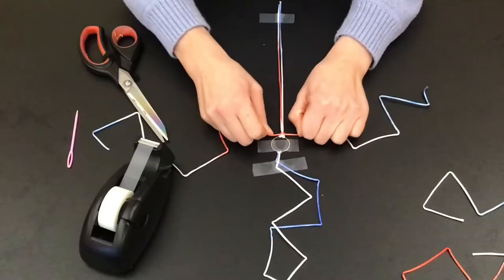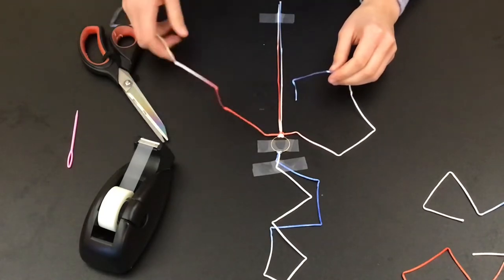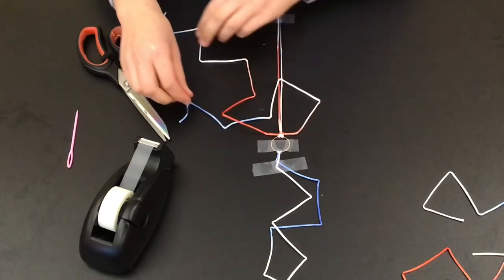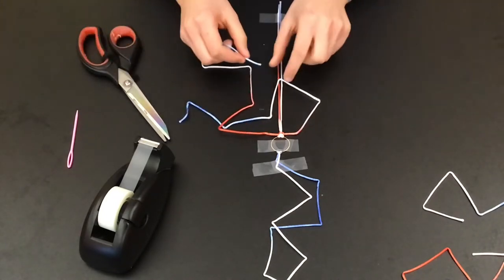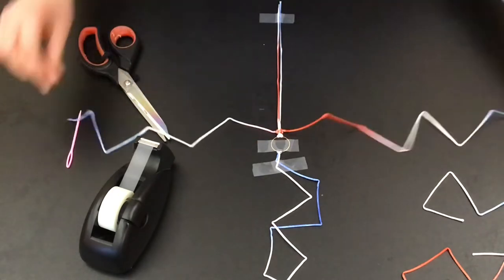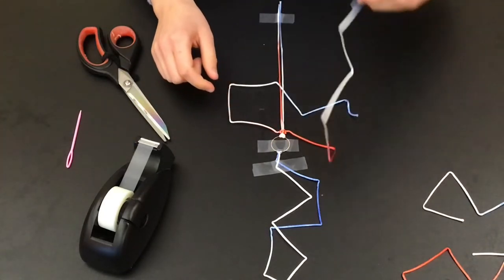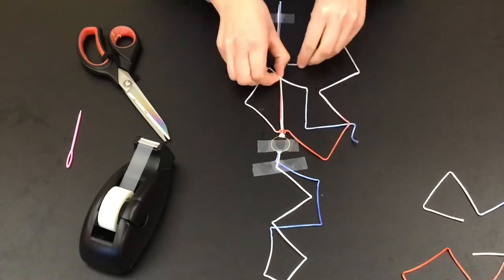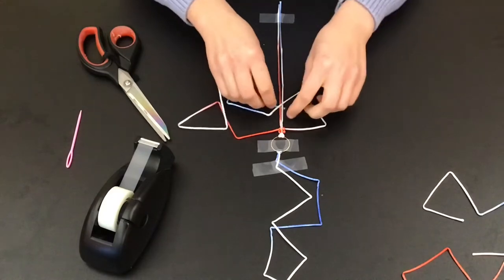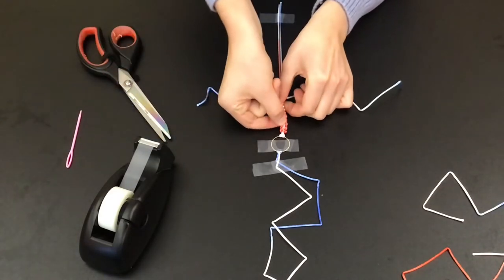Do this exact same thing but start on the right side. So pass it over both of the strings in the middle, under the other string, and then take that string and pass it under where all three of the other ones cross. Then pull on both and make it nice and tight. Do this as many times as you want. I would recommend 10 to 20 times.